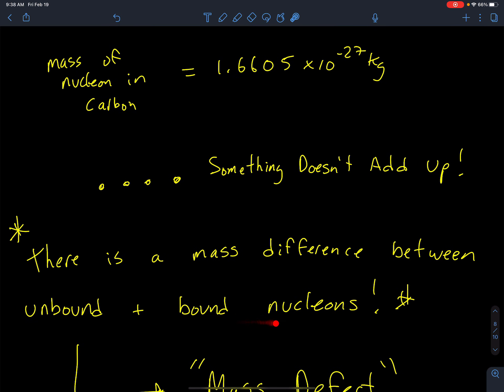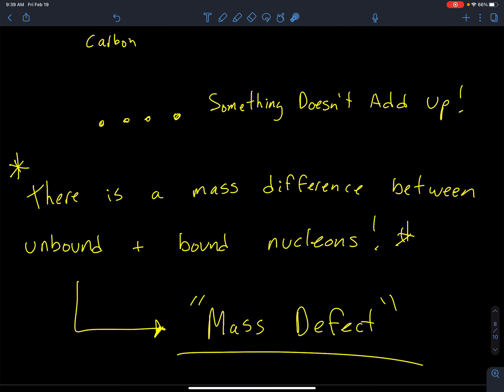There's a mass difference between unbound and bound nucleons. That's what they said. As soon as you start binding them together, you lose some mass. And they called that term the mass defect. So the mass that you lose when nucleons bind together is called the mass defect.